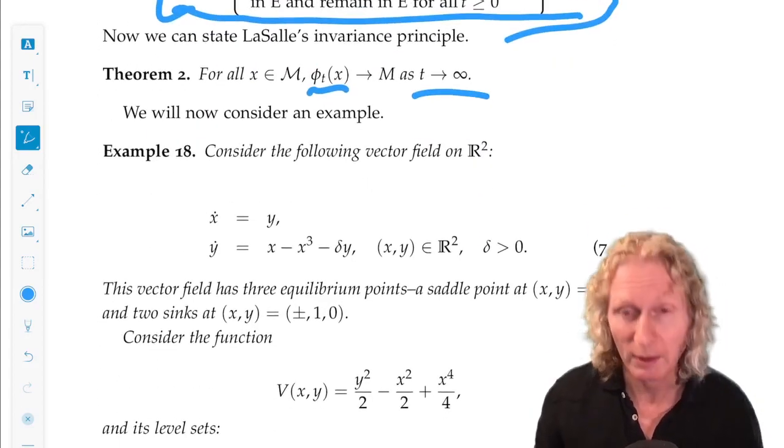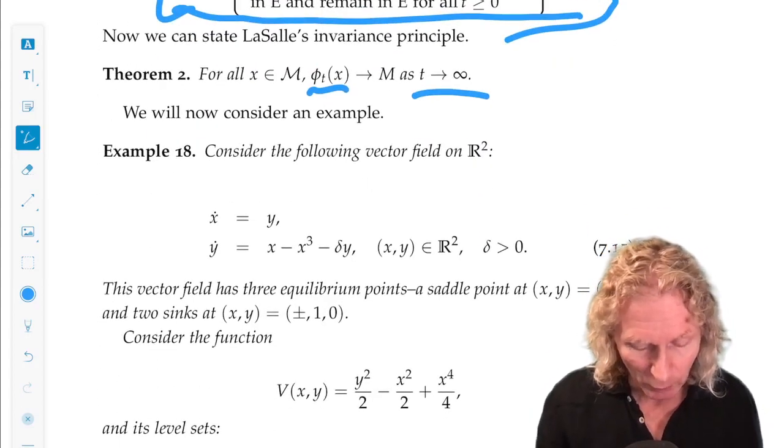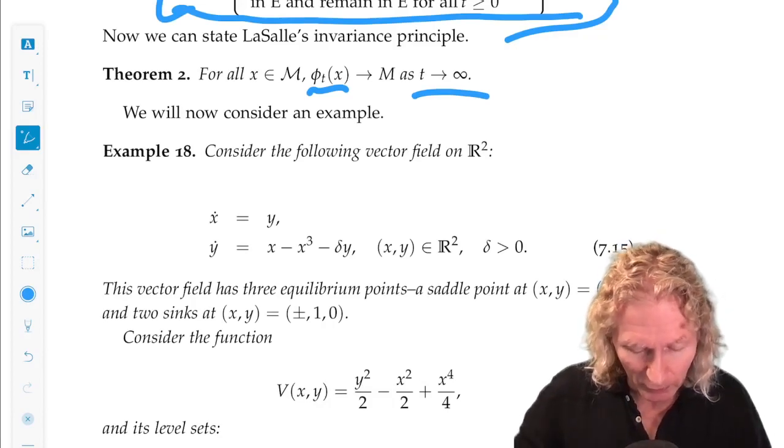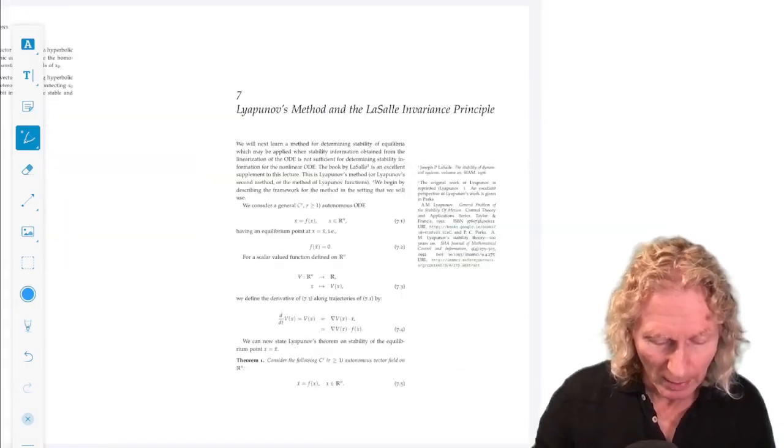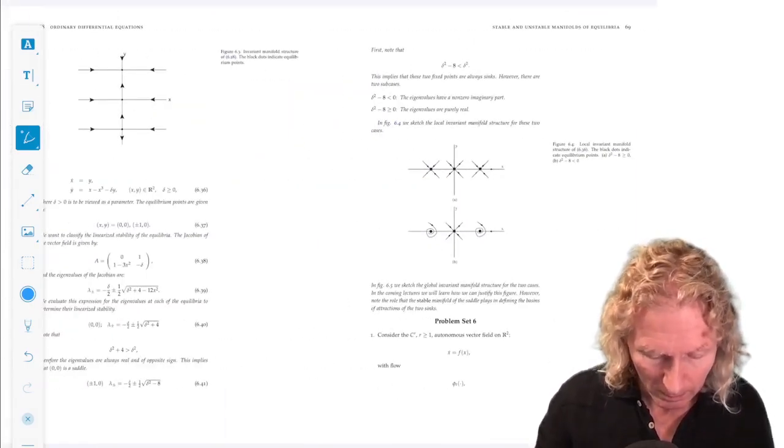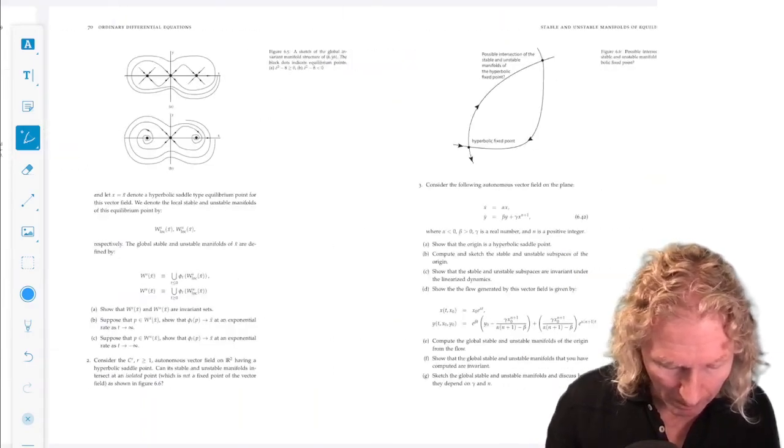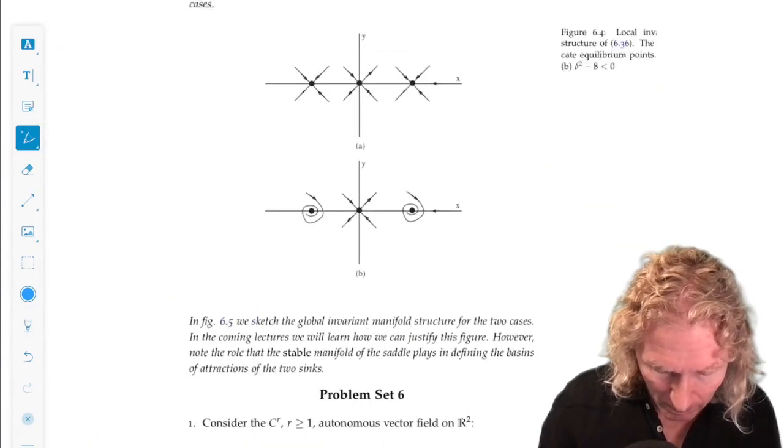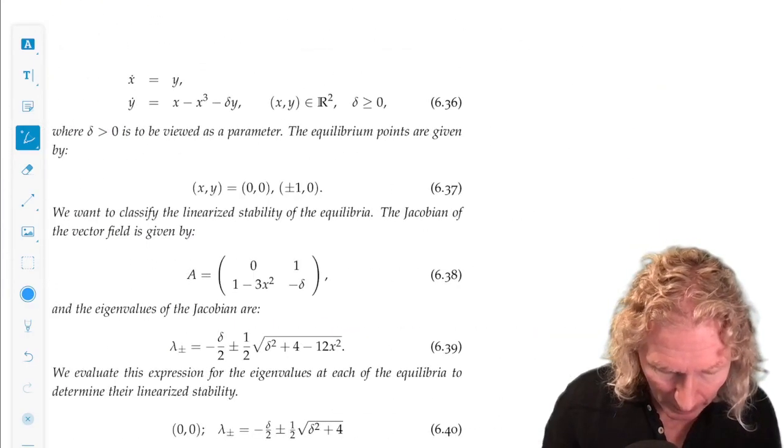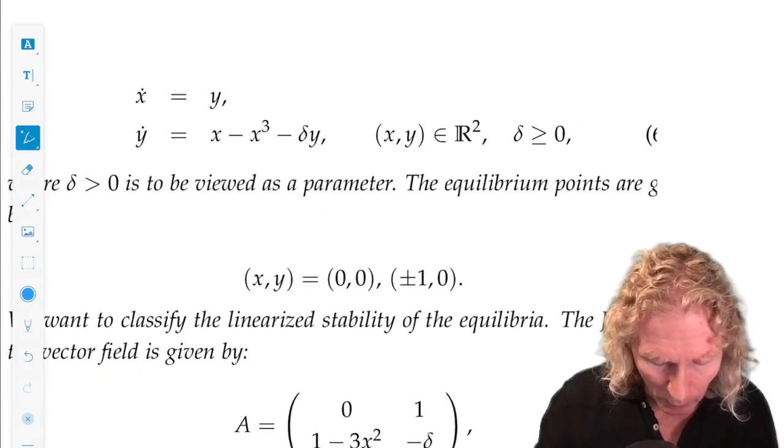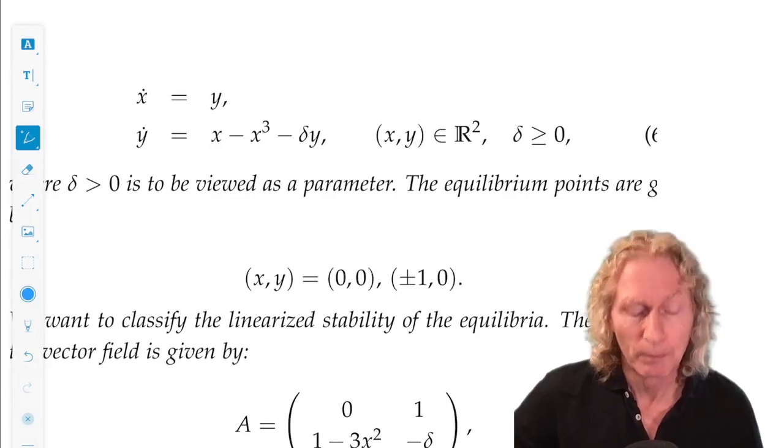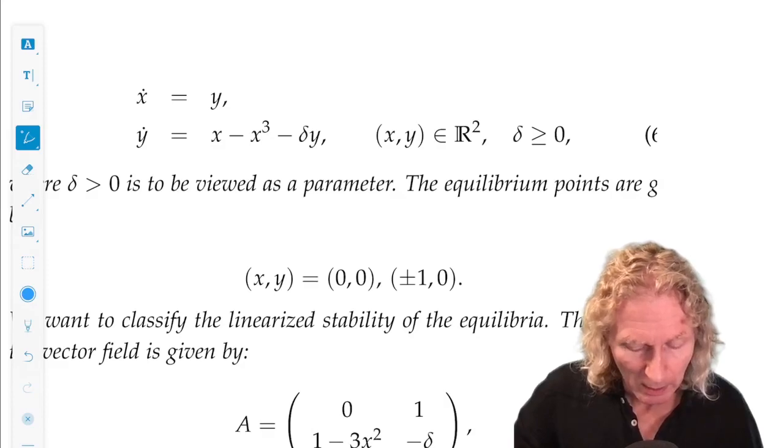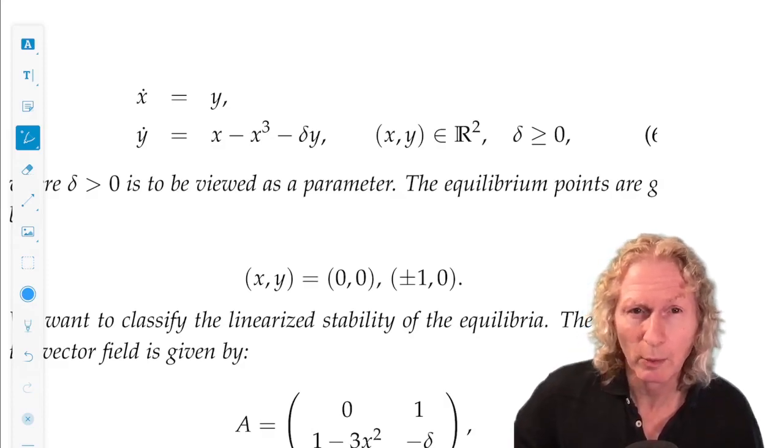Here's the first example we're going to look at, and you've seen this before. Example 18: ẋ = y, ẏ = x - x³ - δy. We saw this in the last chapter. This had three equilibrium points, and they're all on the x-axis: (0,0) and (±1,0).